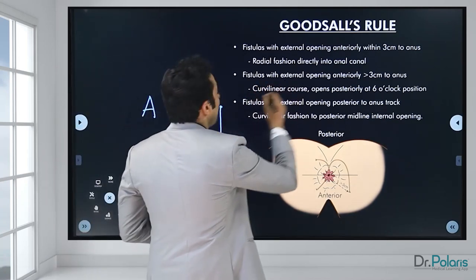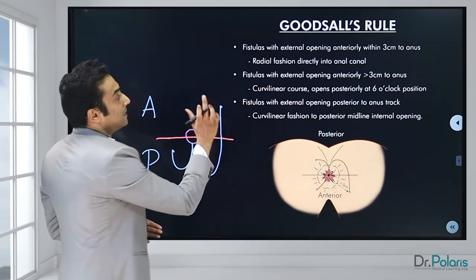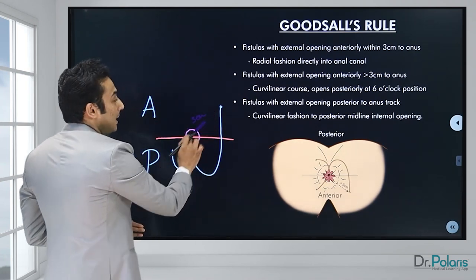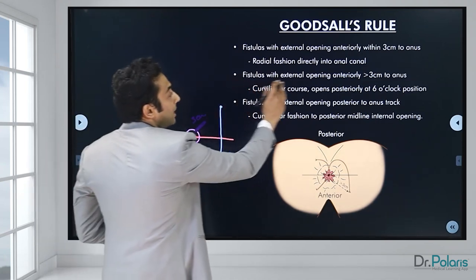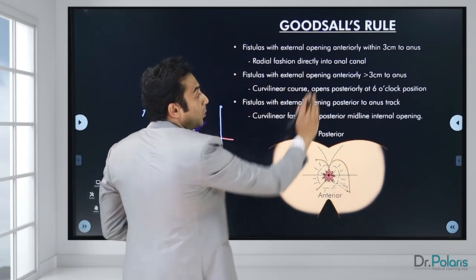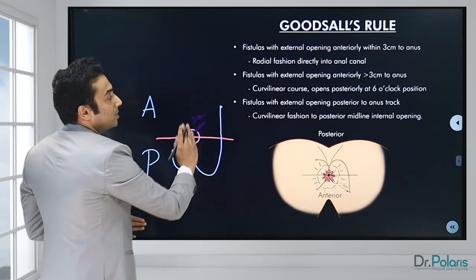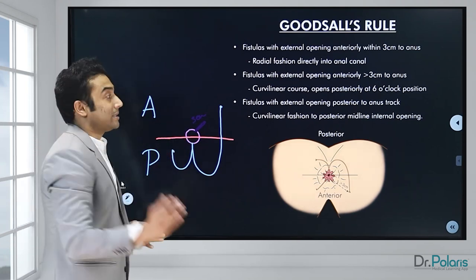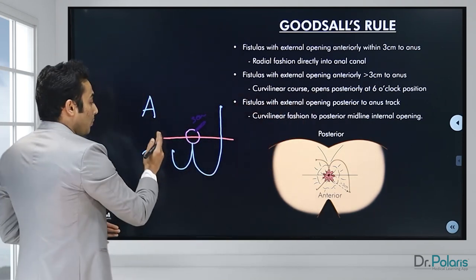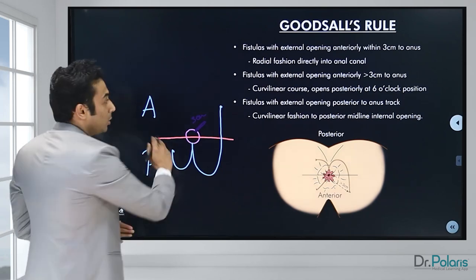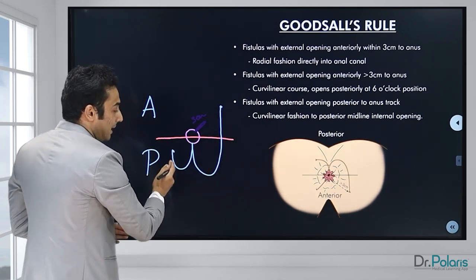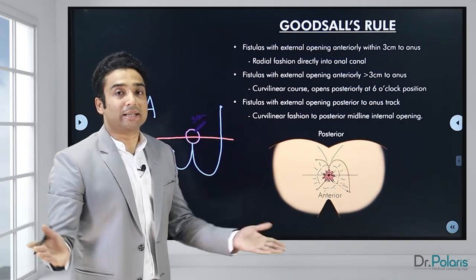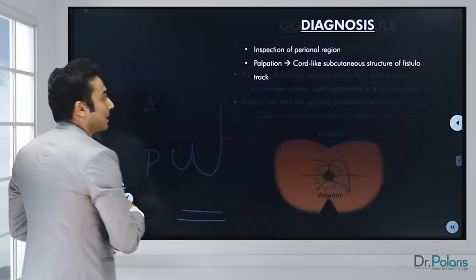To summarize Goodsall's rule: fistulas with external opening anteriorly within 3 cm have a radial track with the internal opening in the same line as the external opening. Fistulas with external opening anteriorly more than 3 cm from the anus have a curvilinear course opening posteriorly at 6 o'clock. Fistulas with external opening posterior to the horizontal line have a curvilinear course opening in the midline posteriorly.